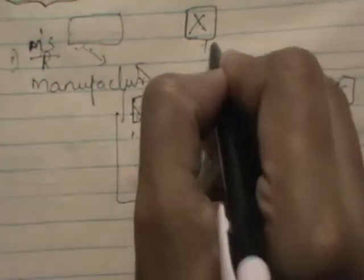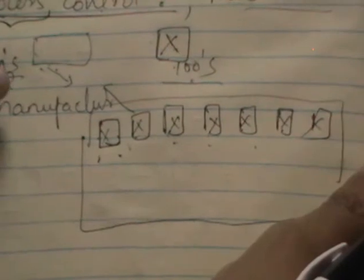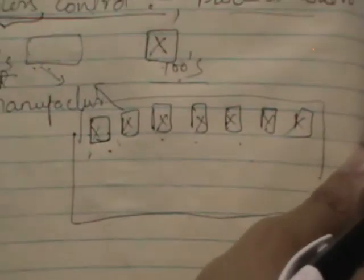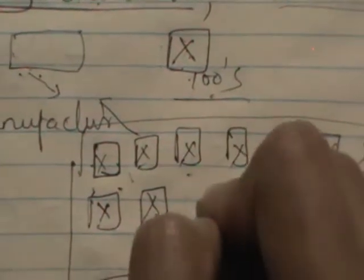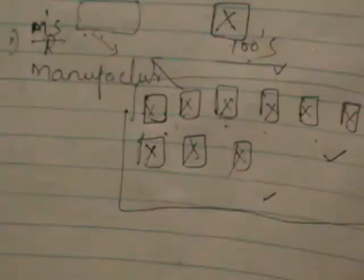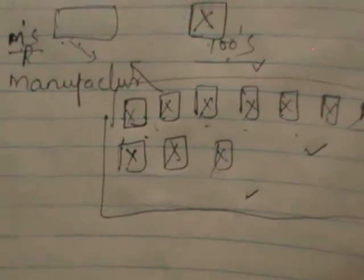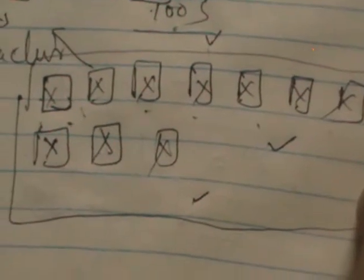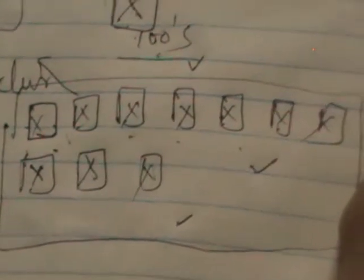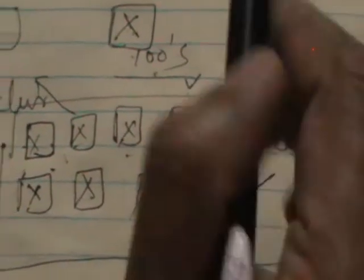Let us take the same example: suppose a unit produces 100 electric fans per day. Even though you have controlled the process, to give double assurance, out of all these 100 electric fans, you are going to choose items at strategic points — randomly. You are given 100 fans, and depending upon the sampling technique, you are going to choose 2, 3, 5, or 6 fans — for example, the 1st unit or 5th unit — to check and control the variability.